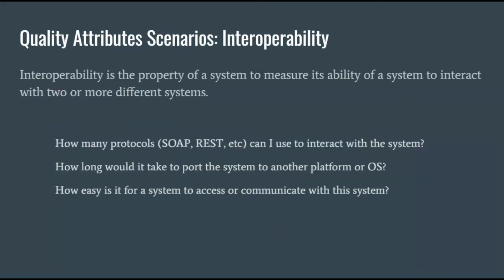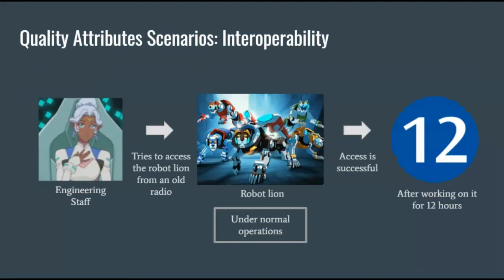Interoperability is how well your system interacts with other systems. It could also be a measure of how easy the system is to move to another platform. An example: if the team decides to access the robot lion from an old radio during normal operations, access is successful after the engineering staff works on it for under 12 hours.